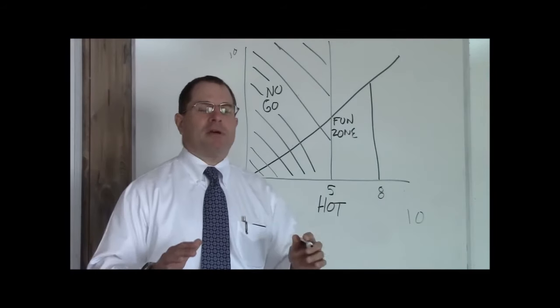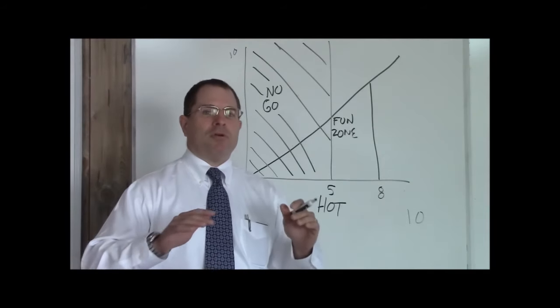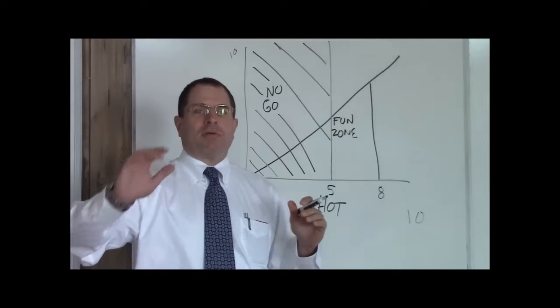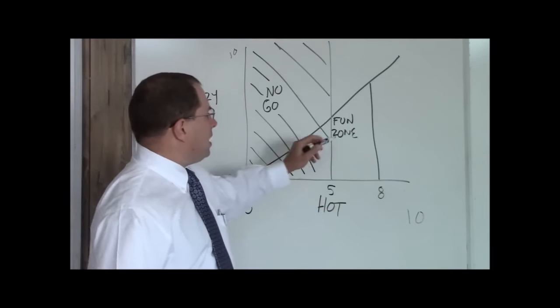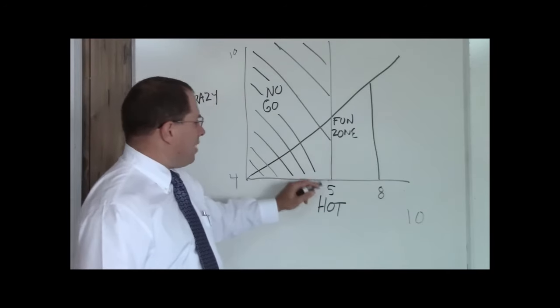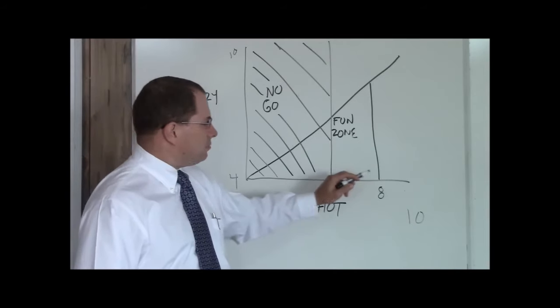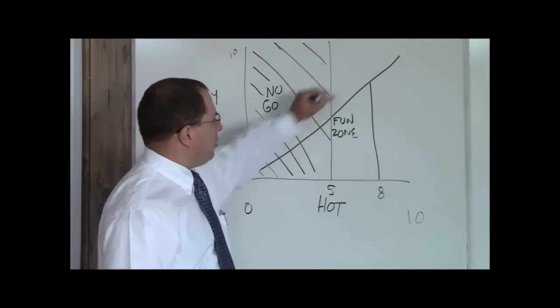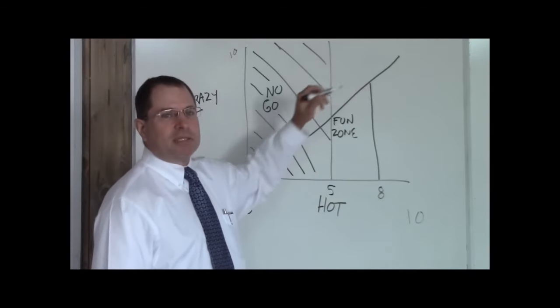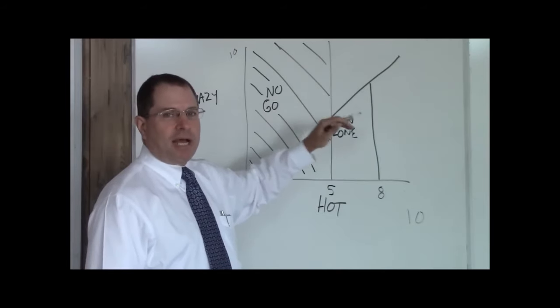But keep in mind, when you're in the fun zone, you want to move out of the fun zone to a more permanent location. So that's the fun zone above a five hot, below an eight hot, and below the crazy line. This means these are, most of the time, not crazy.